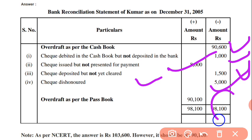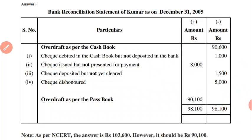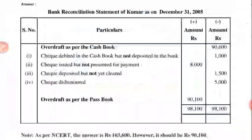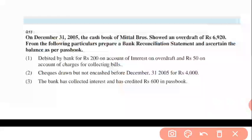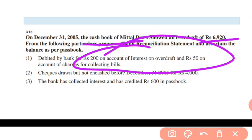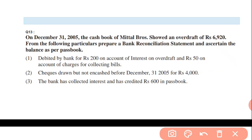Overdraft as per passbook: credit side 98,100, debit 90,100. As per NCERT answer 1,13,600 aa raha hai but our actual correct answer will be 90,100. Now question number 13: on December 31, 2005, cashbook of Metal Brass — balance as per cashbook is overdraft, yaani minus balance. Debited by bank: 20 and 50 — charges hain, paisa kat raha hai, minus. Check deposited but not yet credited: 4,000 — minus. Bank collected interest and credited 600 in passbook — aapki cashbook bhi utni badh jayegi.